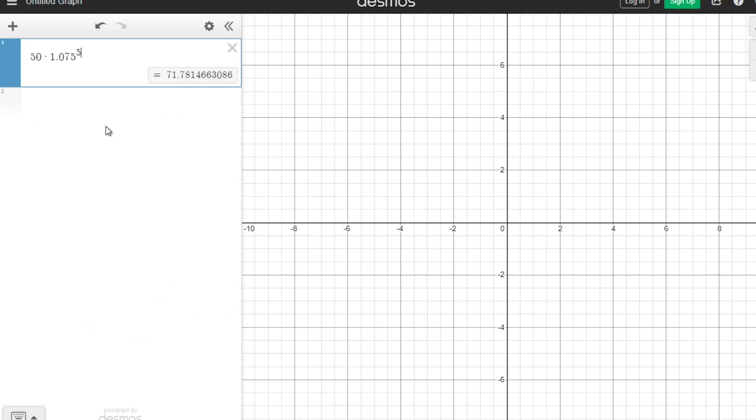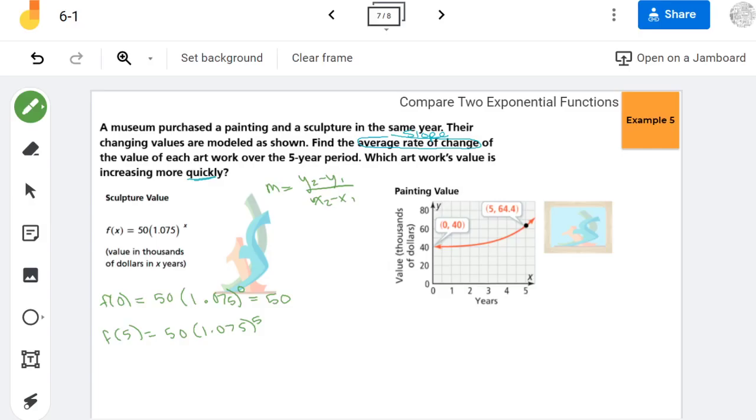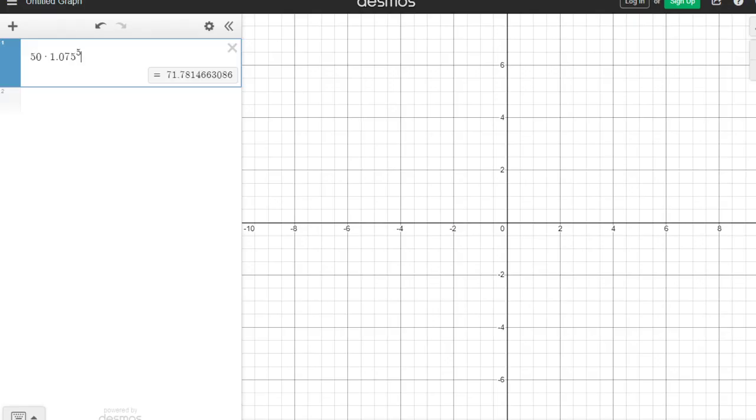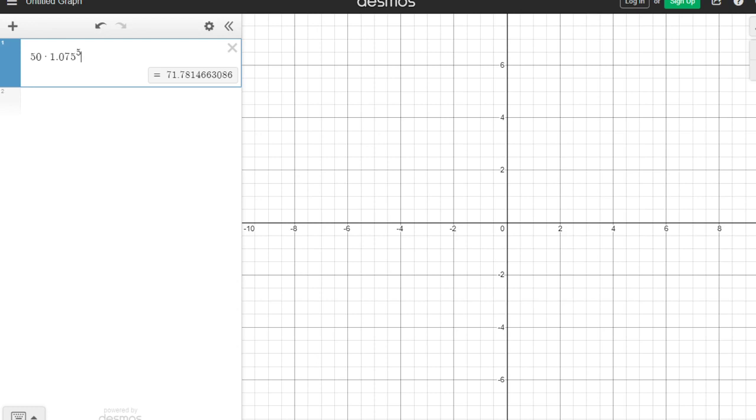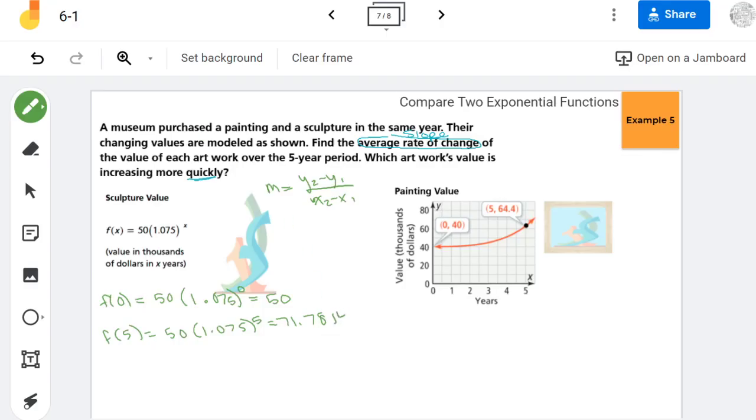So I'm going to get some help from our friend Desmos. So this one is 71.7814. Now here's the thing is Desmos is really picky. So I'm going to take this even further with decimal places just in case they round differently than I do. 1466.